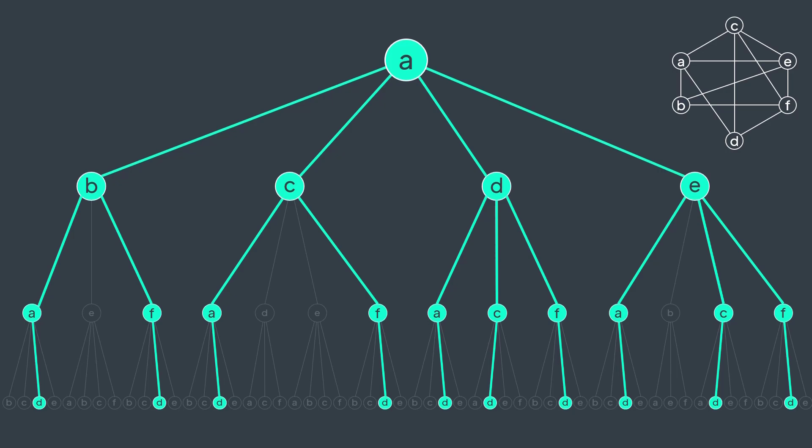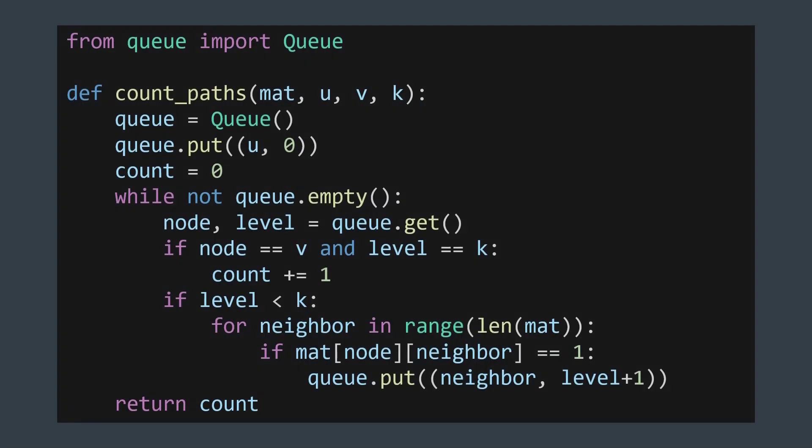Implementing this process can be done with breadth first search. We start by enqueuing start vertex with a level of zero, and while the queue is not empty, we extract a node and enqueue vertices it can go to while increasing the level by one. The level represents how many edges we used, the length of the path. If the level of the current node is equal to k, then we found a path of length k. We increment counter if the destination is the destination vertex we're searching for.